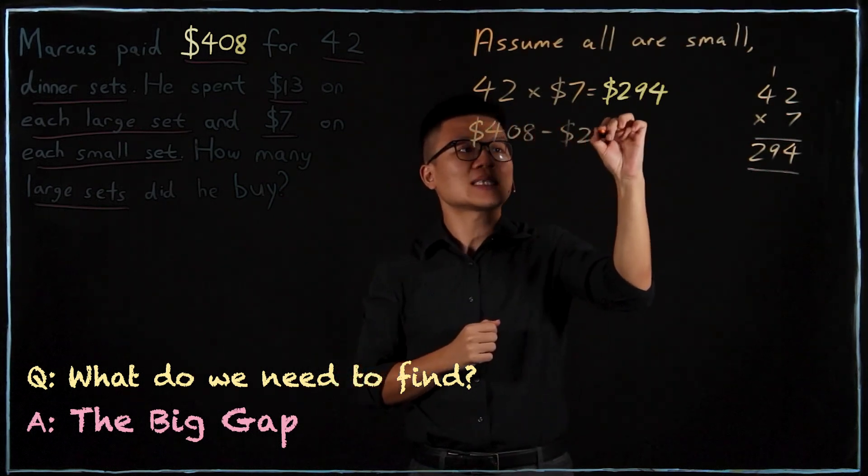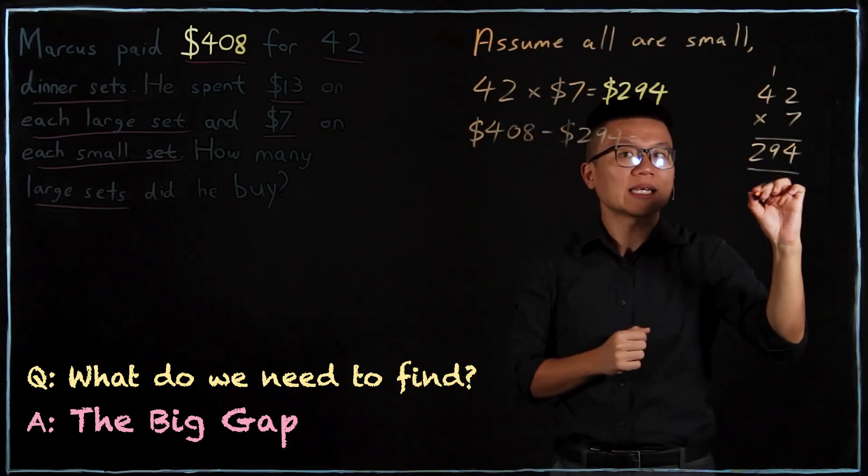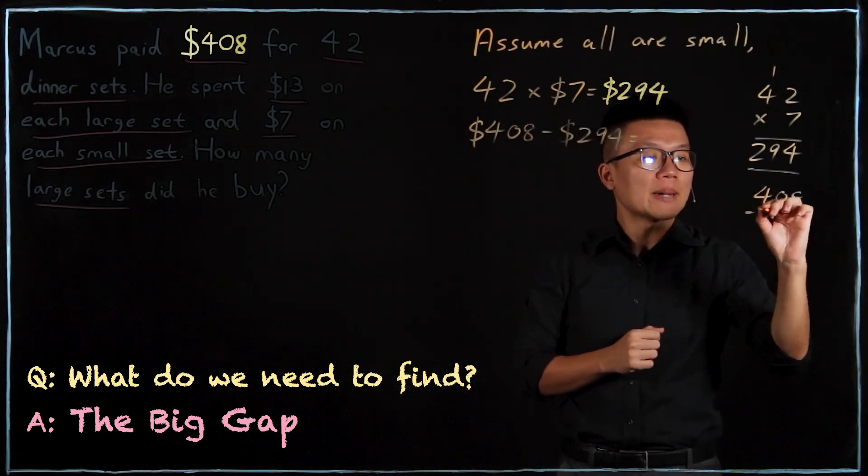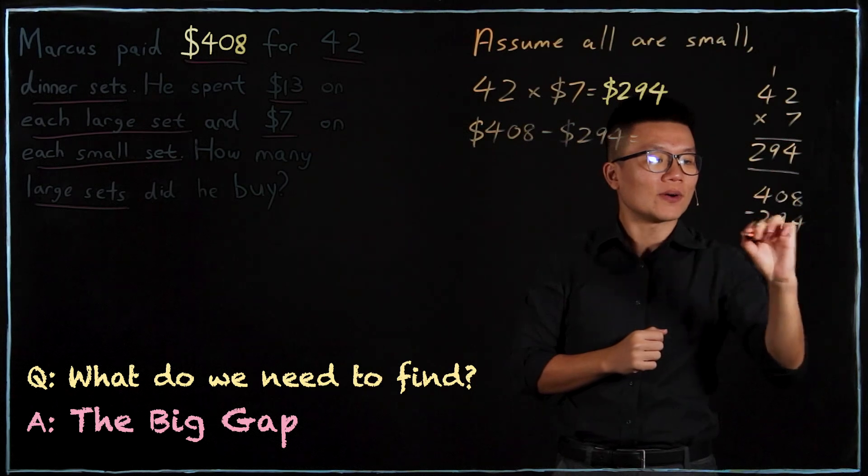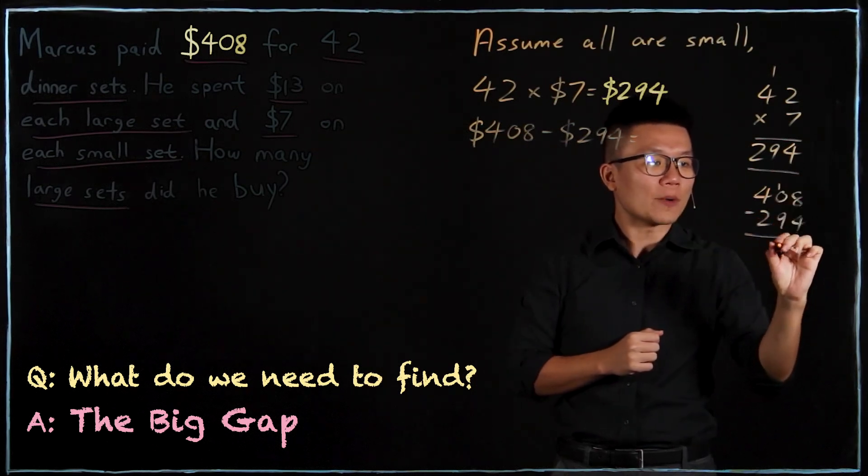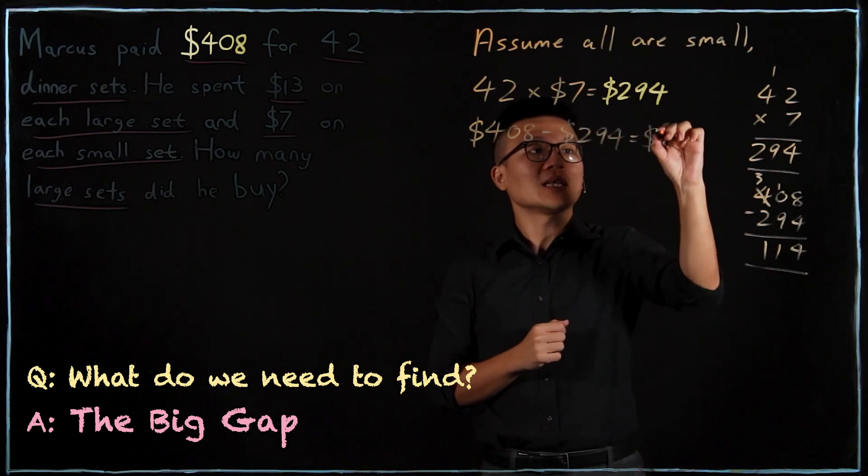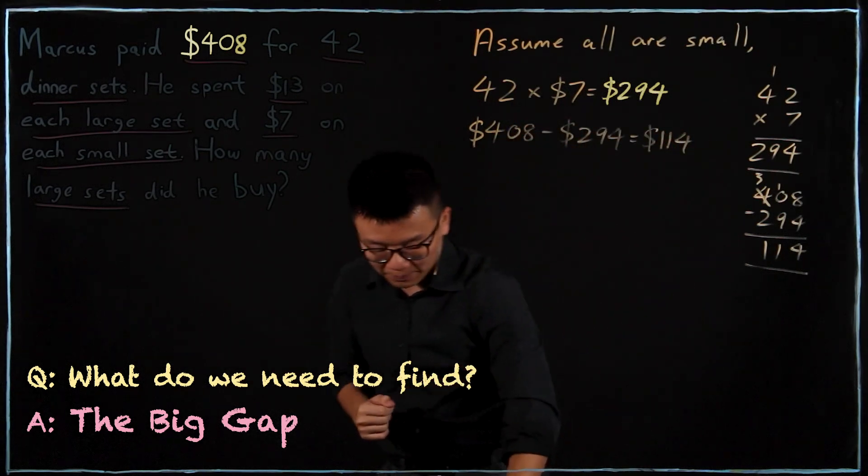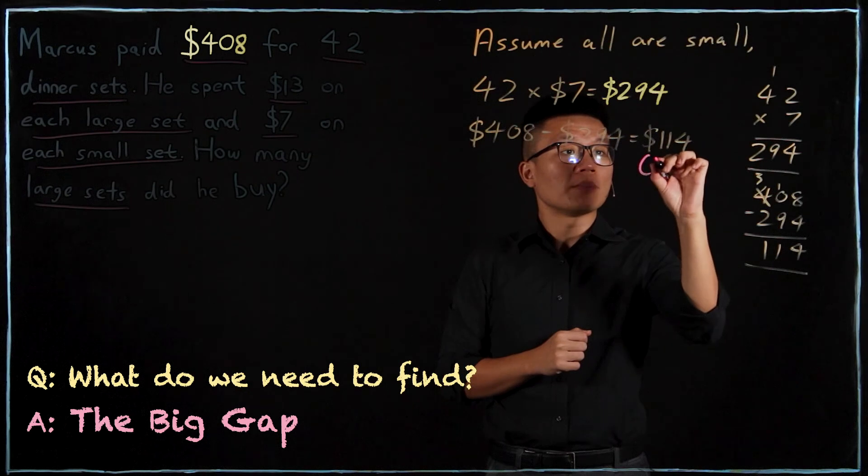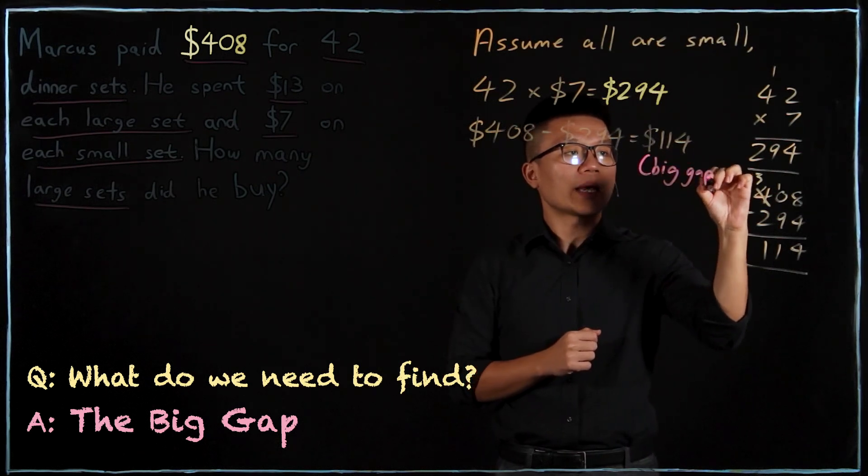I'll do it by the side again: $408 minus $294. I will regroup over here. I'll get $114. So this is the big gap. I'll just write big gap.